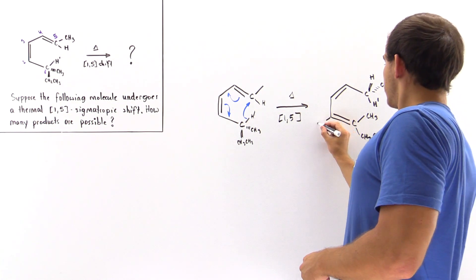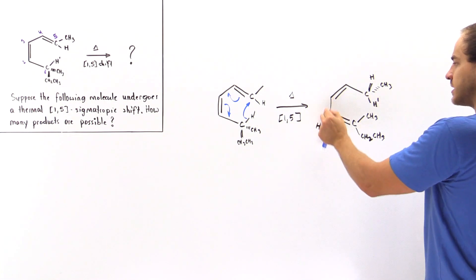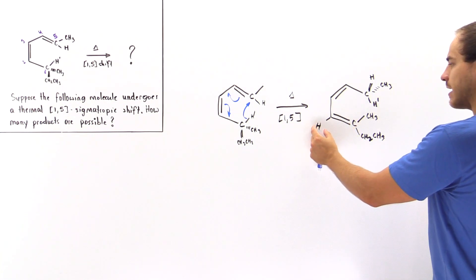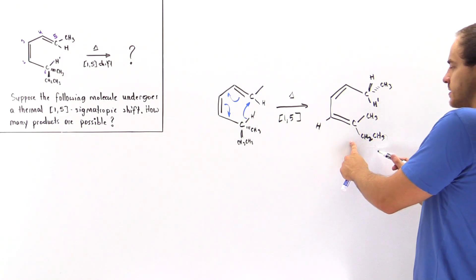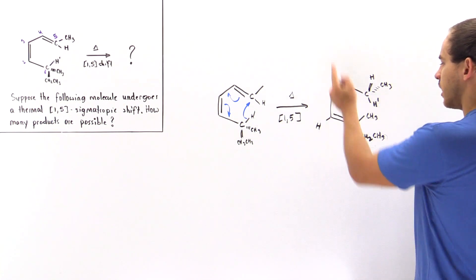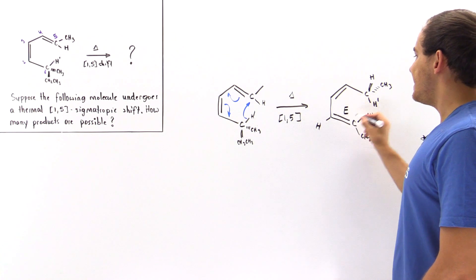Now notice we have an H here. We have four different groups attached to this double bond system. So we have our large group on this side pointing one way and the large group on this side pointing the other way. And so this double bond is an E isomer.